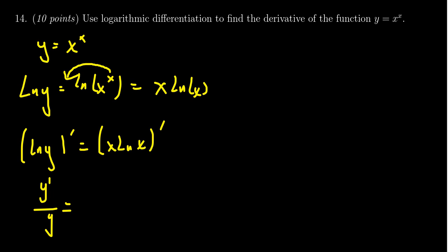The product rule is going to come into play here. You have to take the derivative of x times that by the natural log, and then we're going to take the derivative of the natural log of x times that by x.